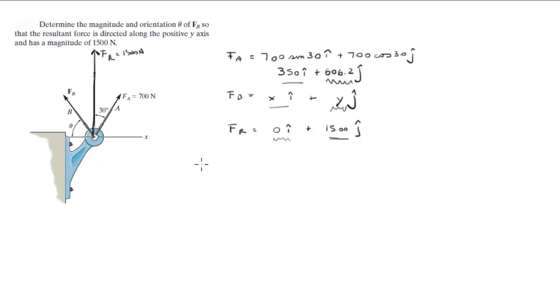F of B, so you know that 350 plus x is equal to 0, so x is equal to negative 350. That's the x component of F of B, so it's negative 350 i.